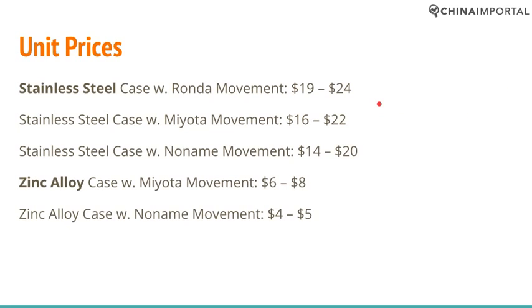On unit prices: what really makes a difference is the material of the watch case. Starting from the bottom, a zinc alloy case with a no-name movement is around $4–$5. A zinc alloy case with a Citizen Miyota Japanese movement — a high-quality but affordable quartz movement — is a step above. A stainless steel case with a no-name movement jumps up almost $10, roughly 200%, to $14–$20. So the material of the watch case, not the movement, is really decisive when it comes to pricing.